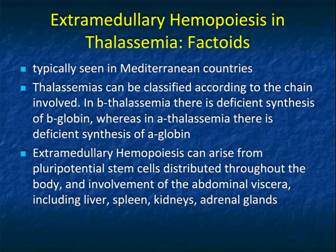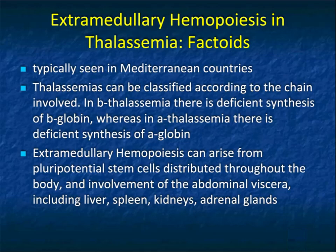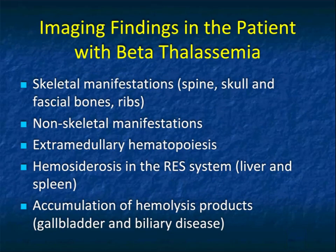Some factoids: extramedullary hematopoiesis with thalassemia is typically seen in Mediterranean countries. It can be classified according to the chain involved — beta thalassemia involves deficient synthesis of beta globin, alpha thalassemia involves deficient synthesis of alpha globin. Extramedullary hematopoiesis can arise from pleural potential stem cells throughout the body, with involvement of abdominal viscera including the liver, spleen, kidneys, and adrenals. The spleen is the most common site.